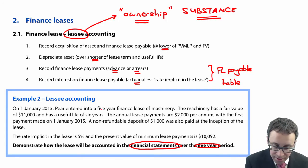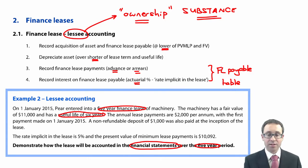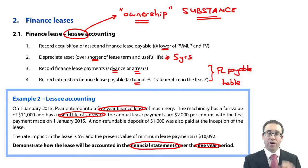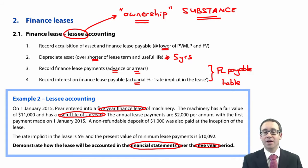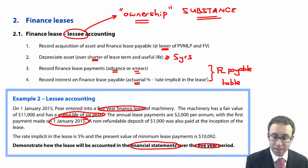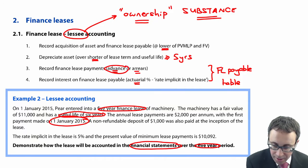If the useful life is six years and there is a five-year finance lease, then the shorter of the lease term and the useful life is five years, so we're going to depreciate it over the five-year period. We know the fair value is $11,000, but we need to capitalise it at the fair value if that is the lower of the fair value and the present value of minimum lease payments. The annual lease payments are $2,000 per annum with the first payment made on 1st January 2015, so that is payments in advance.